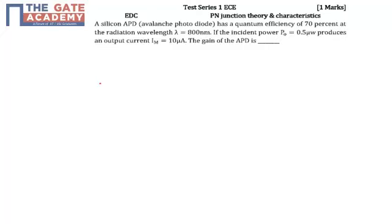So, in the given question, it is mentioned as a silicon avalanche photodiode has a quantum efficiency of 70%.